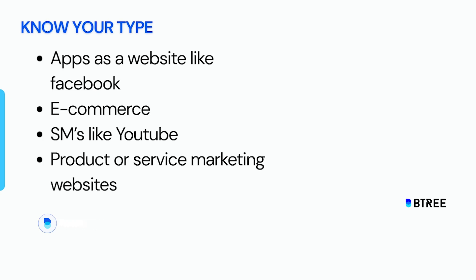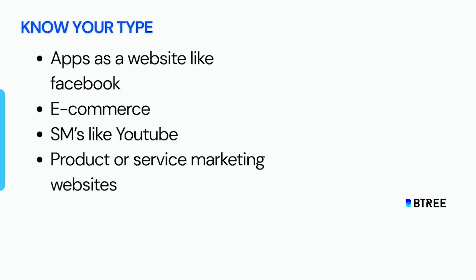First, you should know your website type. There are only 4 kinds of websites. If you want to talk about websites, it feels like an application, right? Because it's actually an application. For example, Facebook is an application, and WhatsApp also. These are things which we use as websites to complete some particular tasks.